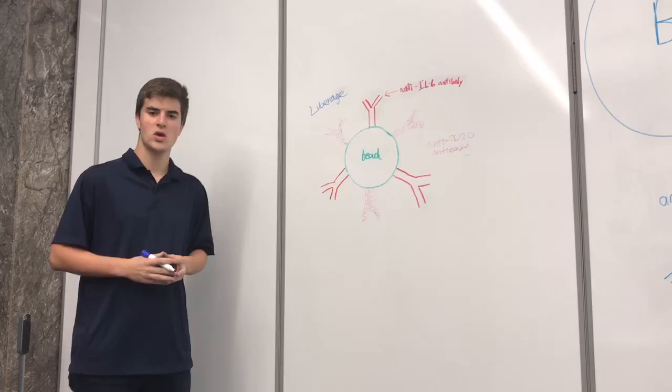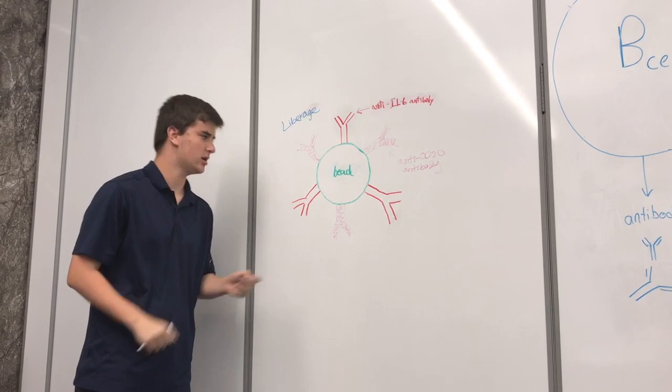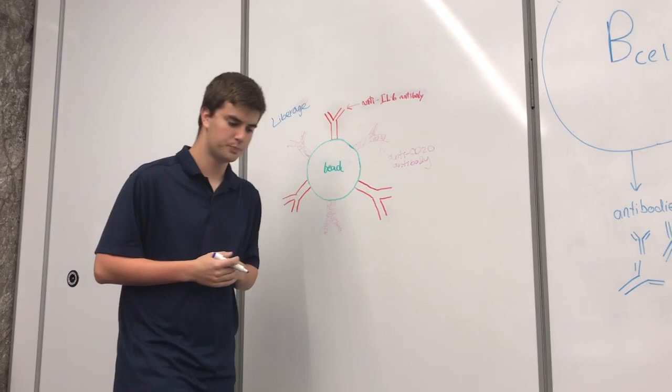So what is the science behind Liveridge? Well, Liveridge combines two antibodies: an anti-IL-6 antibody and an anti-CD20 antibody on a central bead. Now the anti-IL-6 antibody serves to inhibit the inflammation of SLE, while the anti-CD20 antibody serves to inhibit the production of autoantibodies.